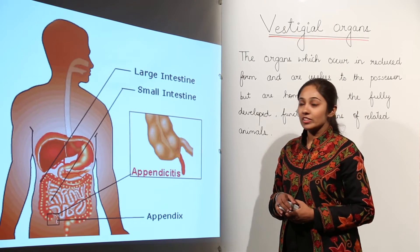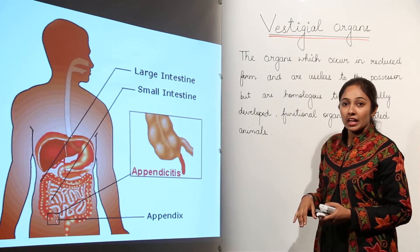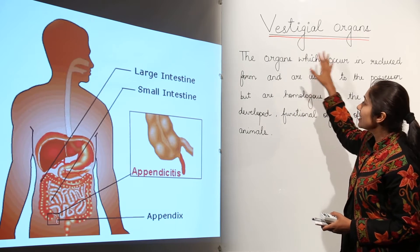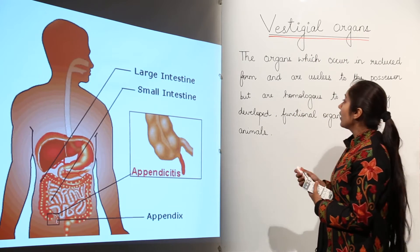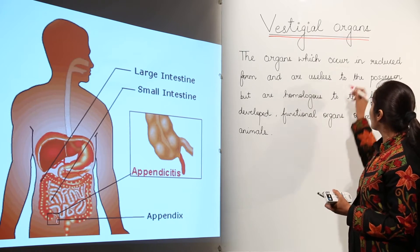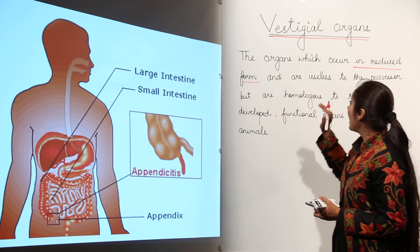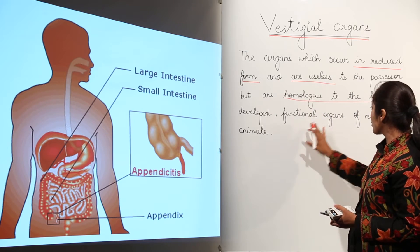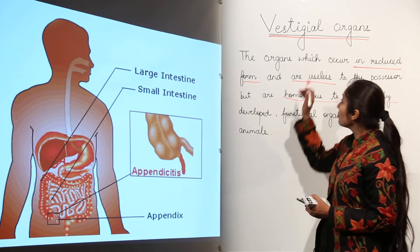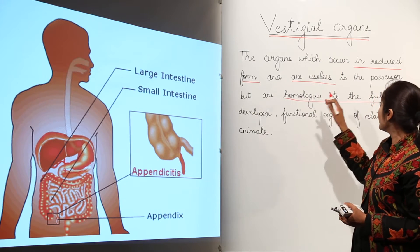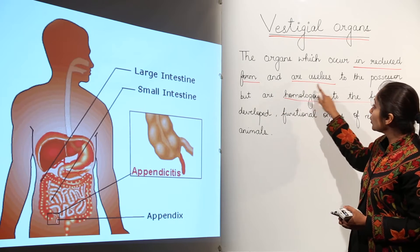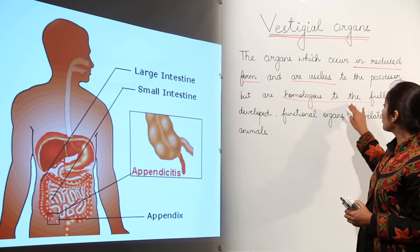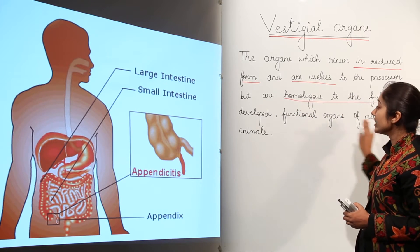Let's move on to the next evidence of evolution: vestigial organs. Vestigial organs are those which occur in reduced form and are useless to the possessor, but are homologous to the fully developed functional organs of related animals. These organs occur in reduced form, they are useless now, but they were useful in our ancestors and are homologous to the fully developed functional organs of related animals.